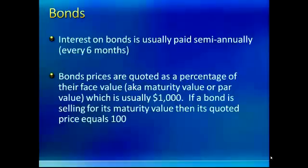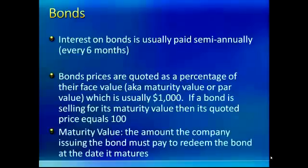If a bond is selling at maturity value, its quoted price equals $100, meaning it's selling at exactly its maturity value. The maturity value or par value is the amount the company issuing the bond has to pay back to redeem the bond at the date it matures.